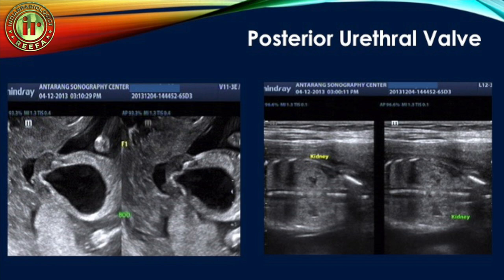In urethral atresia, the bladder is grossly distended with very thin walls. The kidneys are small and echogenic due to obstructive cystic dysplasia, and amniotic fluid is markedly reduced or absent. In primary VU reflux, the bladder wall appears normal, the bladder is distended, the ureter may be dilated or normal depending on the stage, there is hydronephrosis, and amniotic fluid is normal.